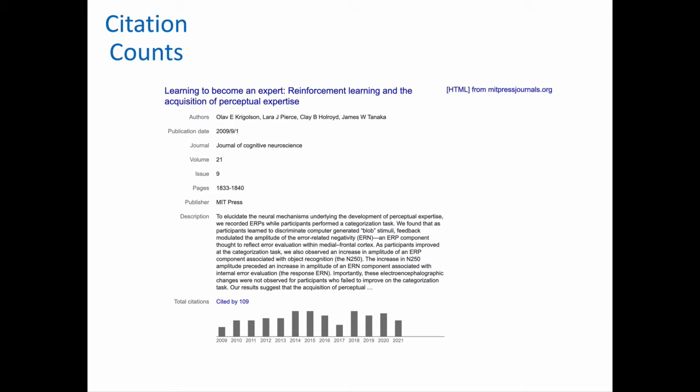What's a good citation count? It's really hard to say because it is also a factor of time. So this paper has been out there since 2009, has been cited 109 times, which I would say is okay.